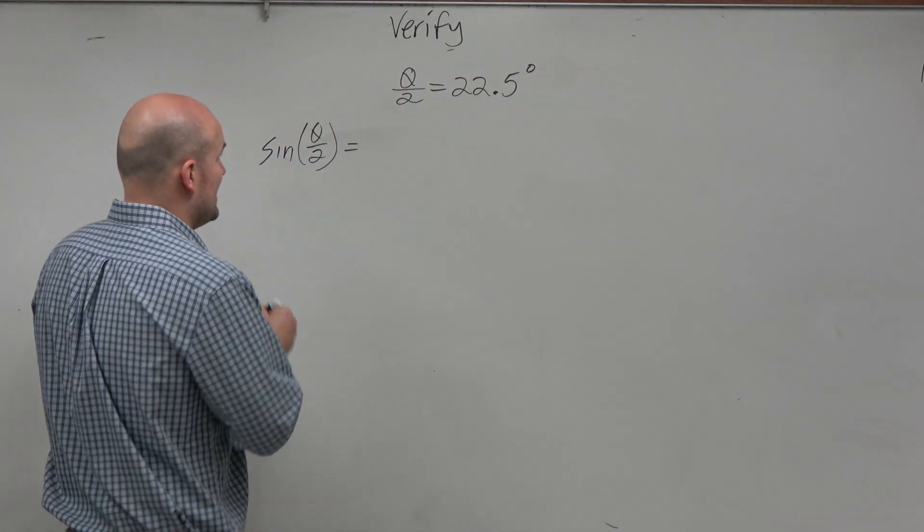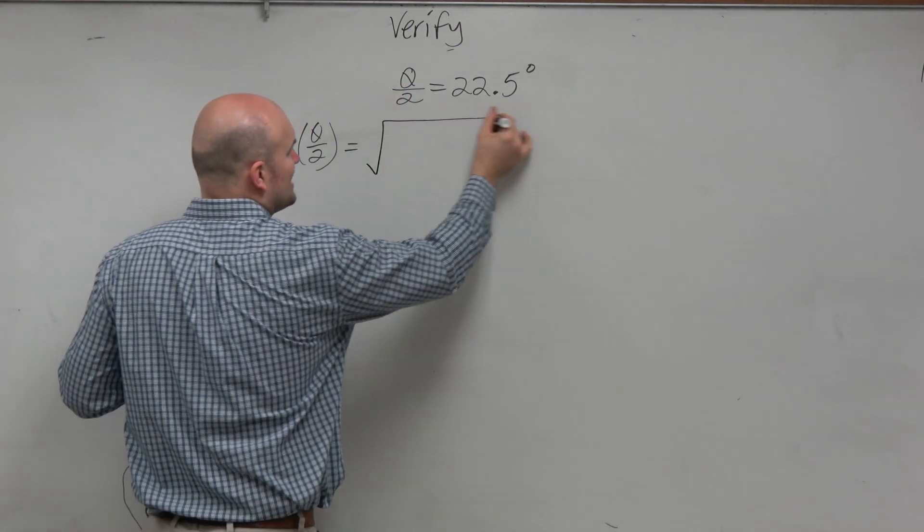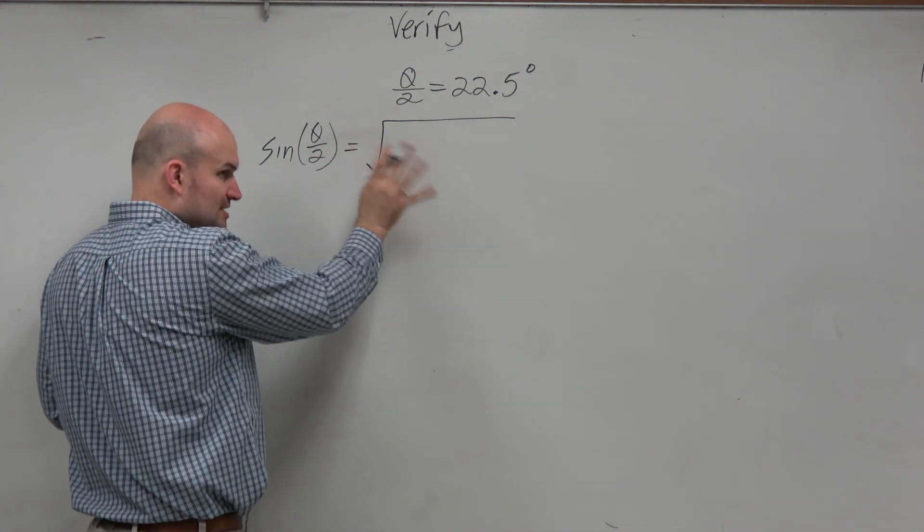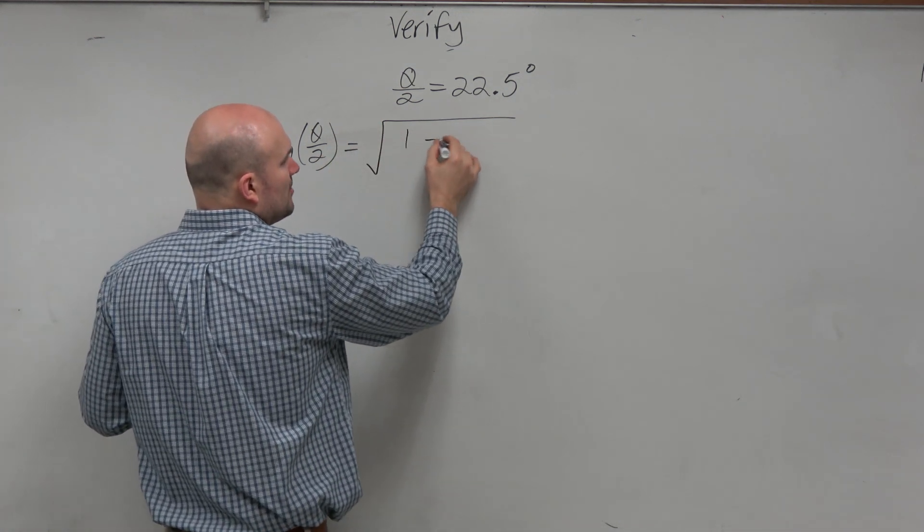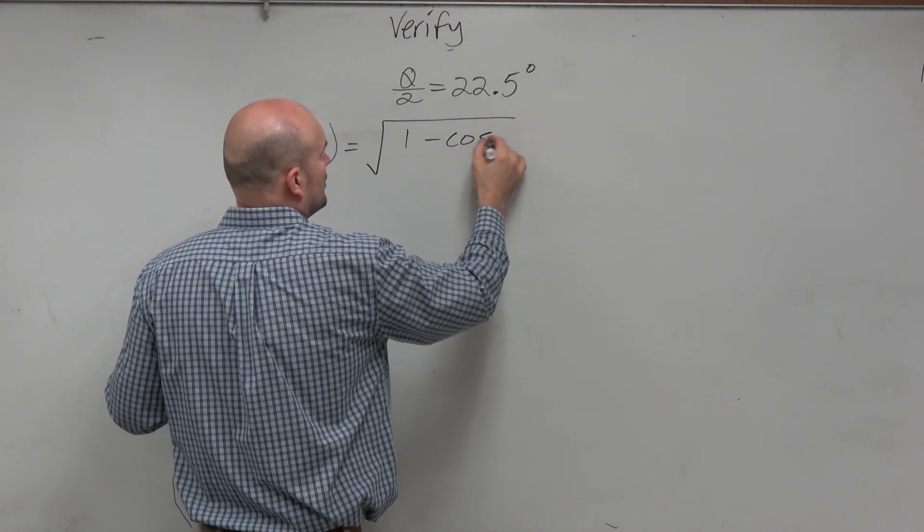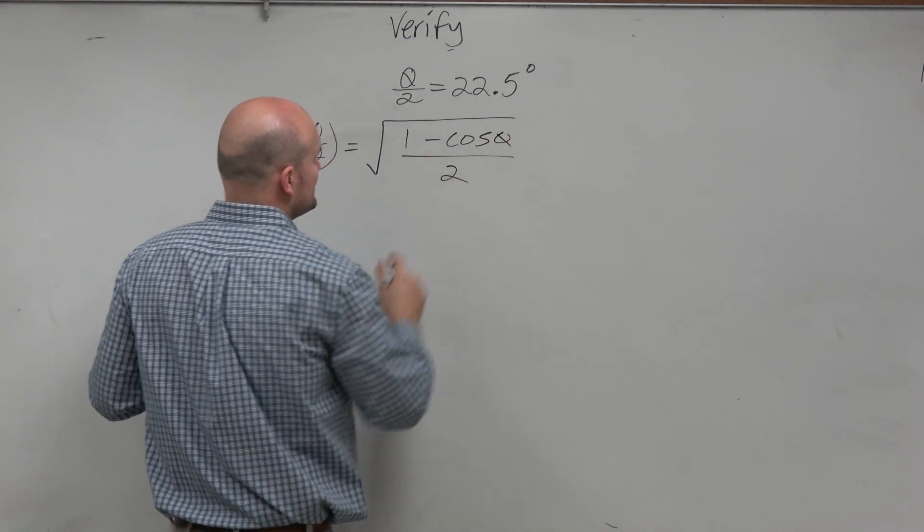So when we do the sine of theta over 2, we're going to use the positive radical. You don't need plus or minus. Don't even put the plus there. You just know it's going to be positive. So the formula for the sine is sine of theta divided by 2.